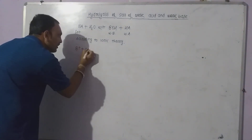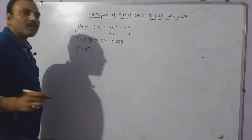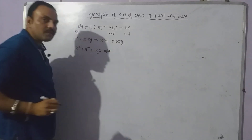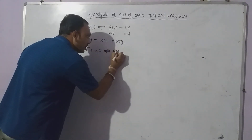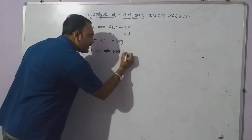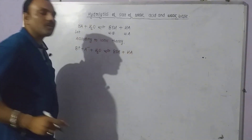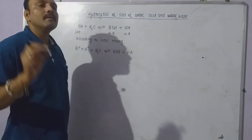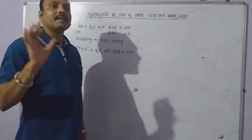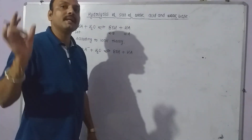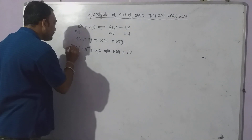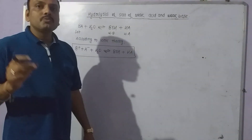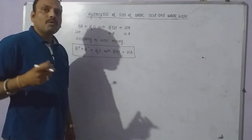The ionic reaction is: B⁺ + A⁻ + water. Water is a weak electrolyte, so it remains as it is and cannot be written into ions. The base BOH is weaker, so it remains as it is. The acid HA is weaker as well, so it also cannot be written into ions. Since acid and base are both weak, they are not completely dissociated — they are dissociated feebly. This is the hydrolysis of the salt.